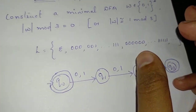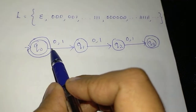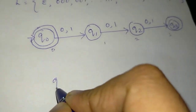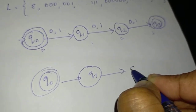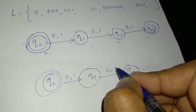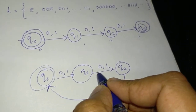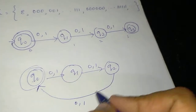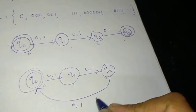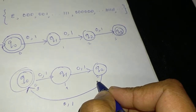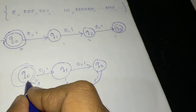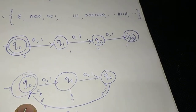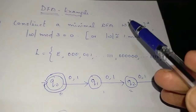Let's construct the DFA a little bit more. We have states Q0, Q1, Q2. The transitions on 0 go through the states, and on 1 there is a transition as well. Here is our final state. Epsilon is accepted, so the initial state is also the final state. That's why we accept lengths 3, 6, 9. This is the minimal DFA for the corresponding question.